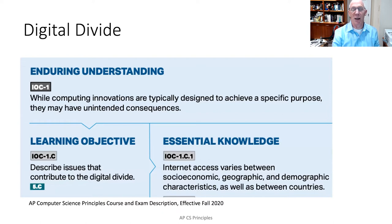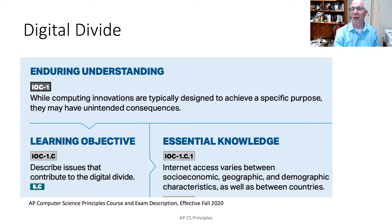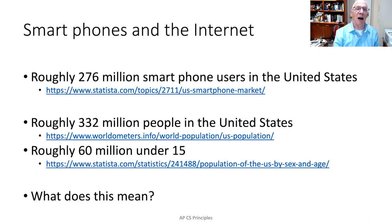When I mention access to computing, I want to highlight one of the enduring understandings from the Computer Science Principles course and exam description, which is the unintended consequences of computing. Access to the internet and computing differs by socioeconomic status, for example. Let's see how that works and why the beneficial and harmful effects might be both mitigated by and expanded by this digital divide.